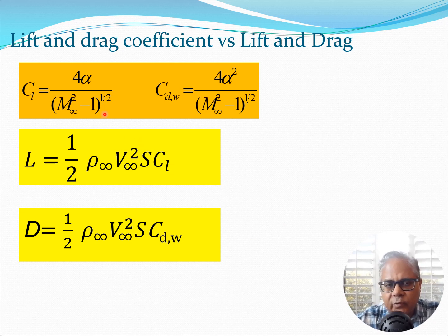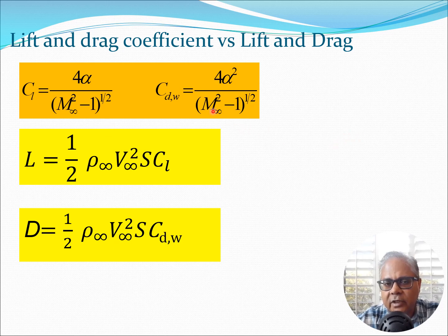Sometimes people get slightly confused: if CDW is coming down, why would drag go up? You should keep in mind that CDW comes from this value of alpha and M∞, but actually drag has this v∞² term also. When you calculate drag from CDW, the fact that you are flying at supersonic speed has a very big impact on the v∞² term. So as you are flying faster and faster, CDW may come down to some extent but the v∞² term keeps going up. There is going to be an interplay between the M∞² term and the v∞² term, and that leads to the actual drag seen by the aircraft.